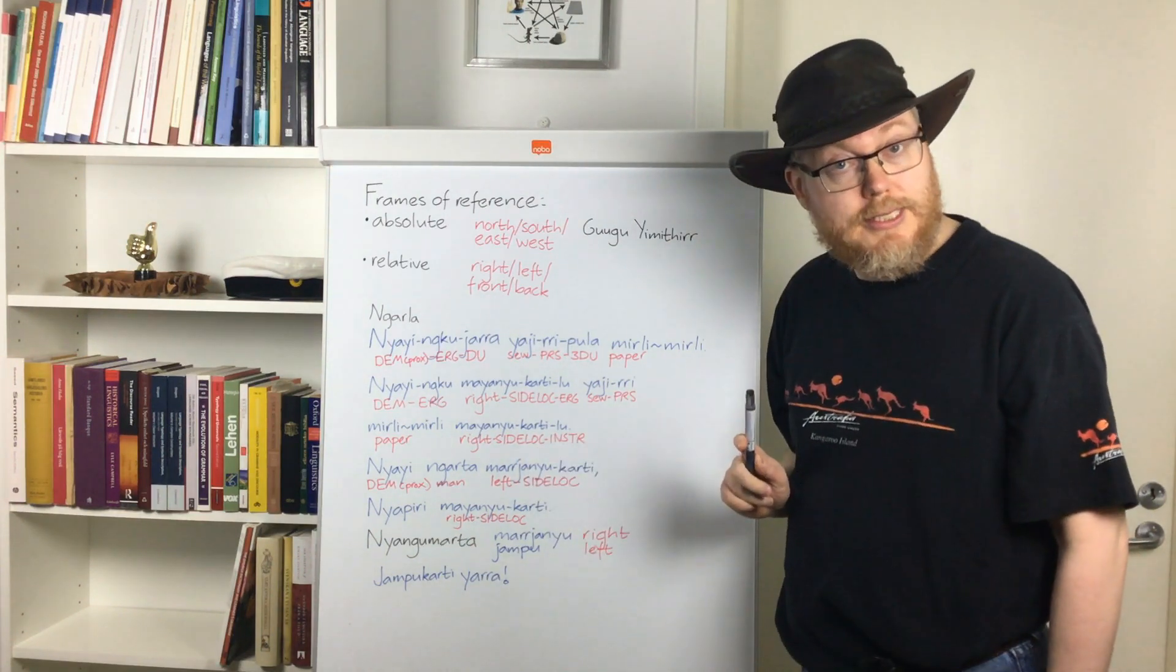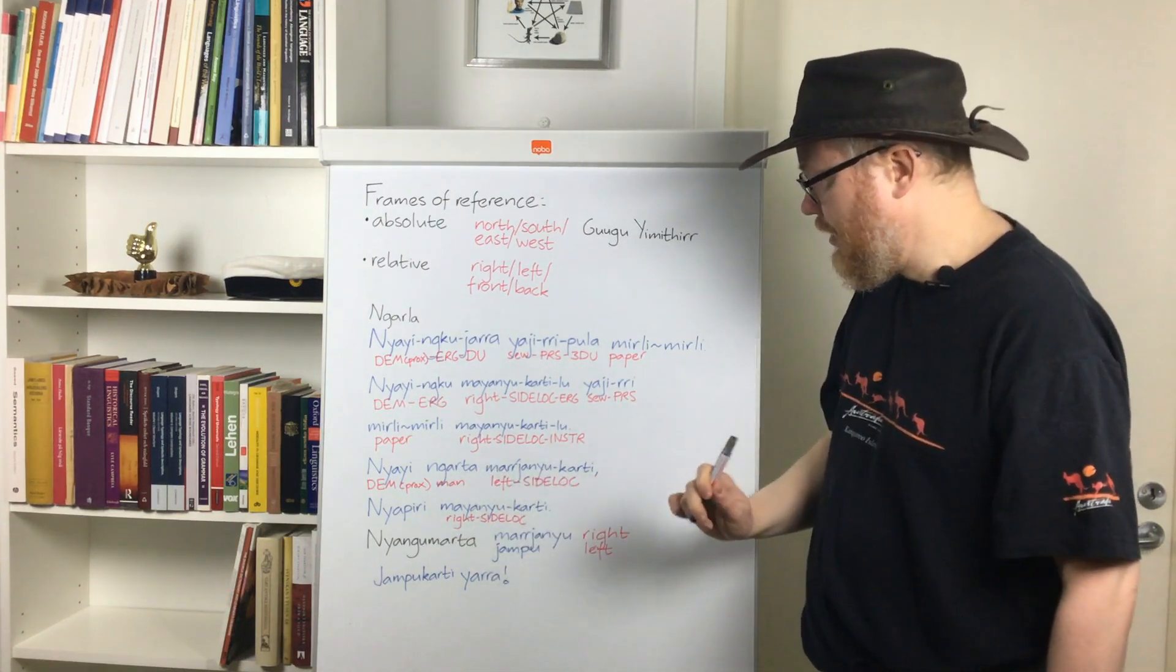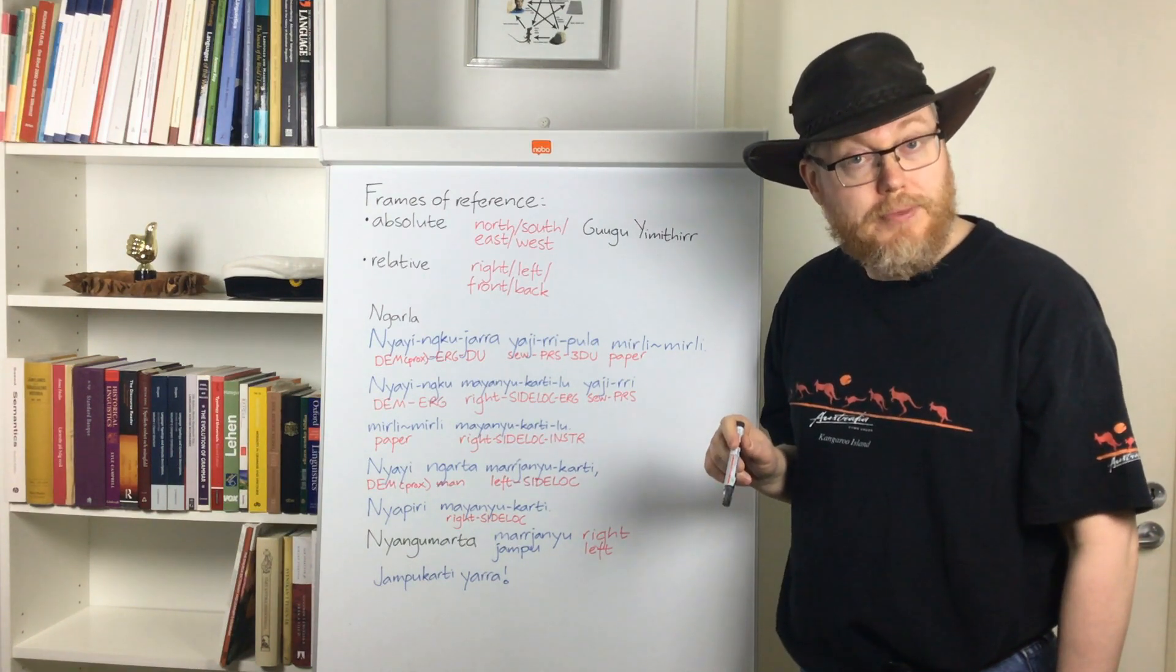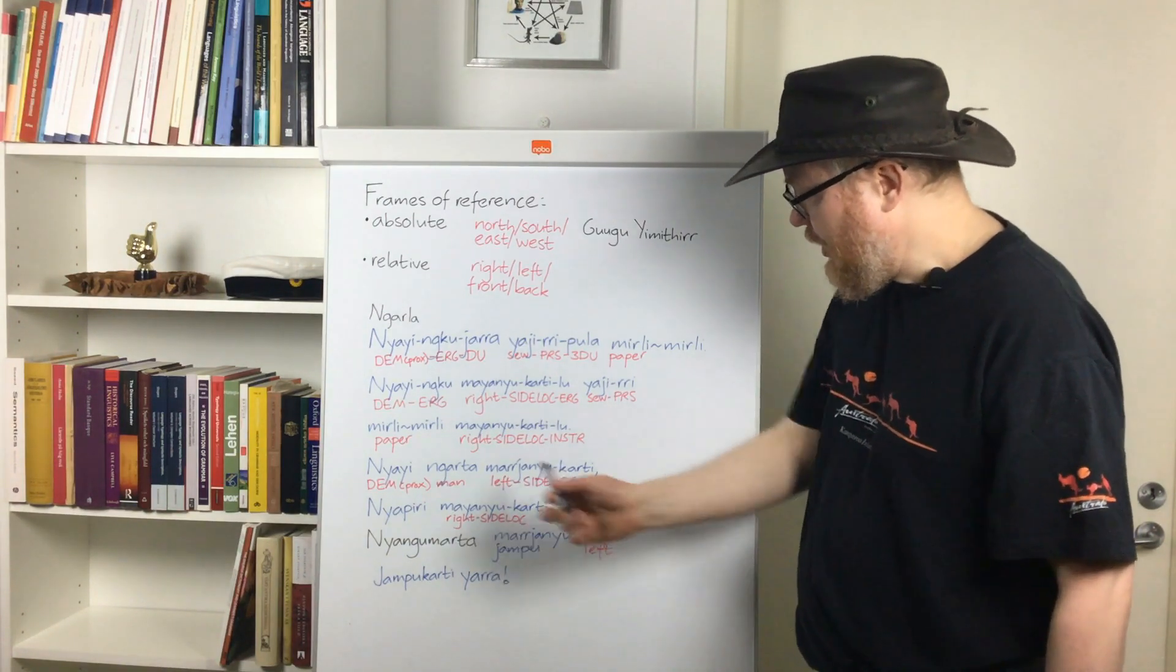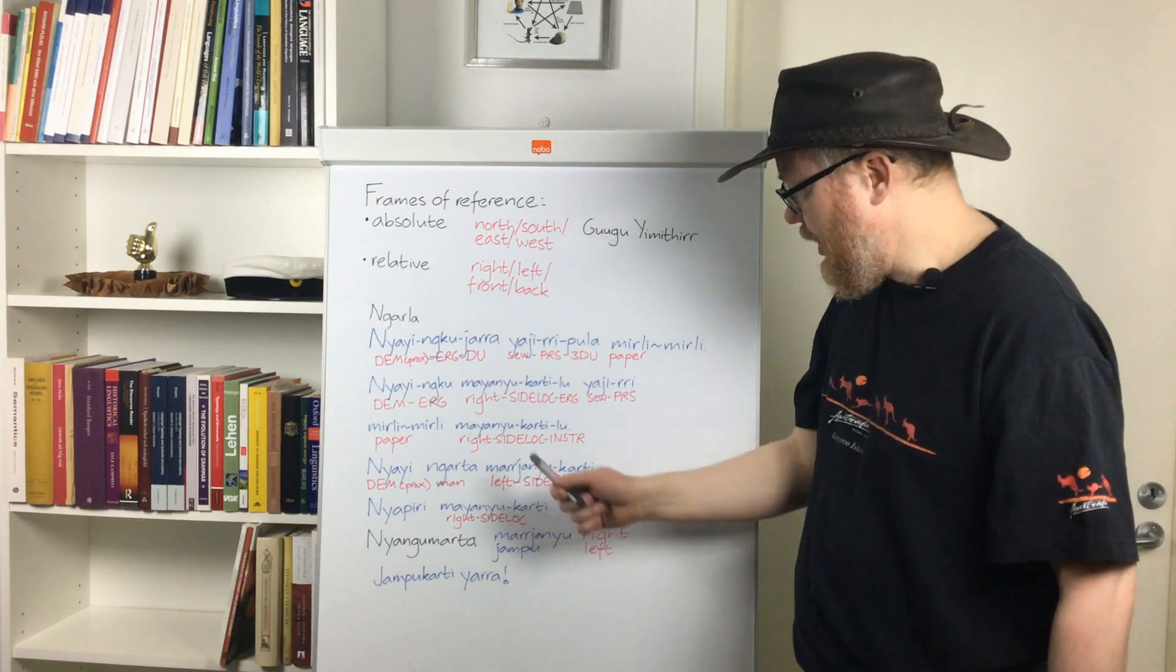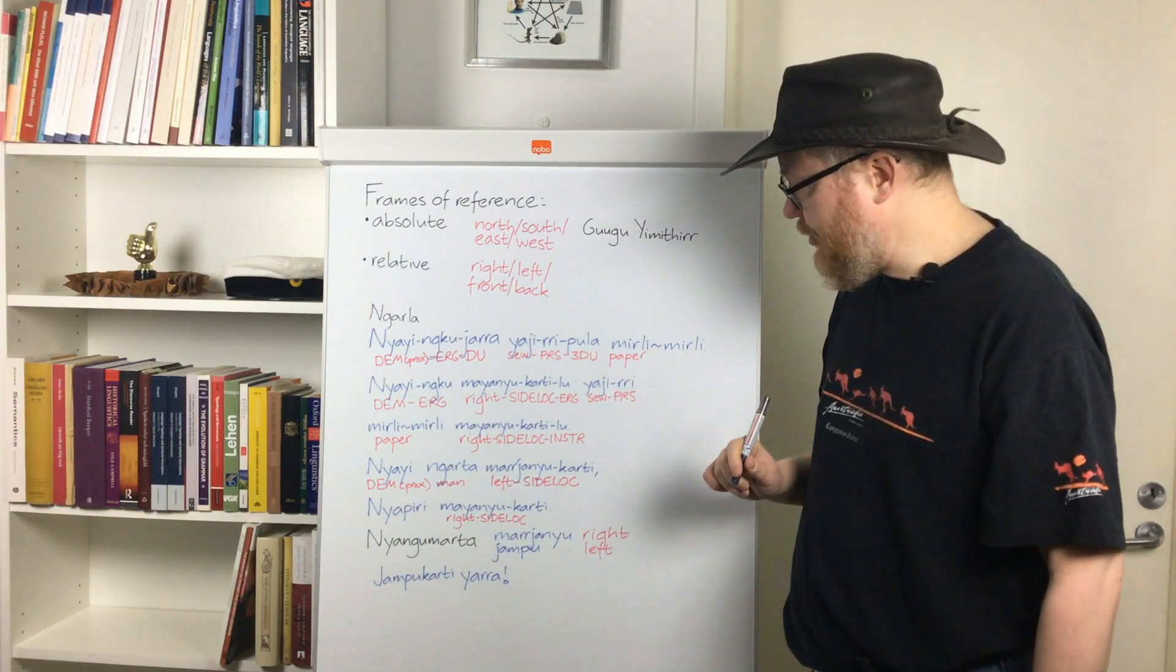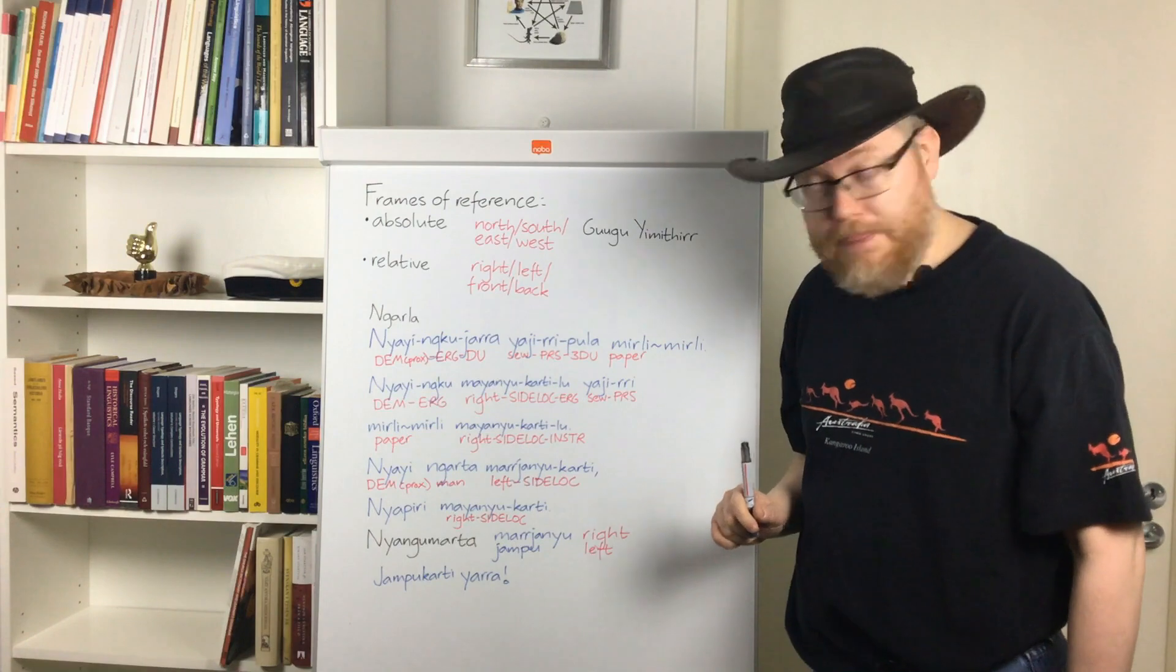Here, in this lower sentence, we also get the Nara word for left, marjanyu. So, majanyu and marjanyu. This was uttered in a context where eating was in focus. There are no verbs here. We have ngara, marjanyukari. So, this man, left, side locative again. Side locative being very common with the words for right and left. So, this should be taken to mean that this man is eating with the left.